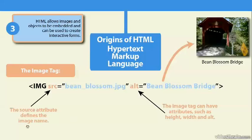The source attribute defines the image name, and the image tag can have attributes such as height, width, and alt as well. We've added two — source and alt — but there are other ones you can add as well.